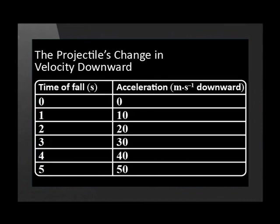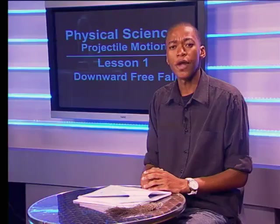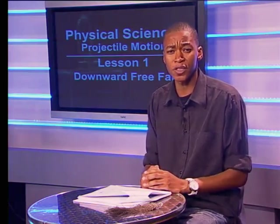Be careful though — when we say the ball accelerates downward, we don't necessarily mean it moves downward; we discussed that in another lesson. The ball's velocity changes as it falls, however the ball's acceleration is 9.8 meters per second squared downward all the time as it falls.